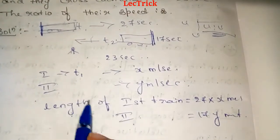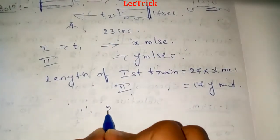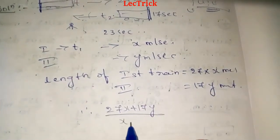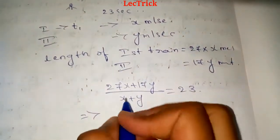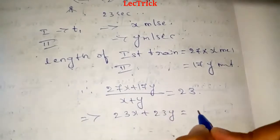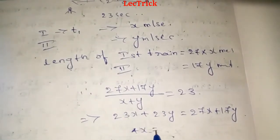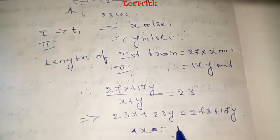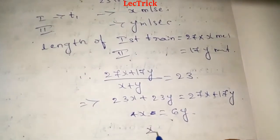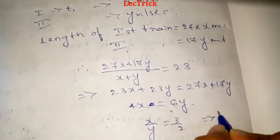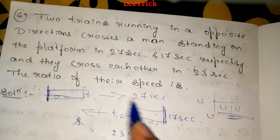They are running in opposite directions. Using the formula: 23x plus 23y equals 27x plus 17y. So 23y minus 17y equals 27x minus 23x, which gives 6y equals 4x. Therefore x by y equals 3 by 2. The ratio of their speeds is 3 to 2.